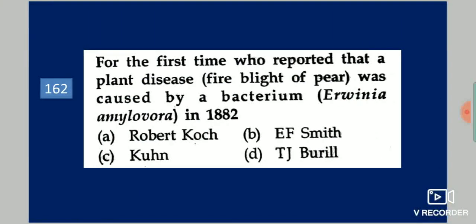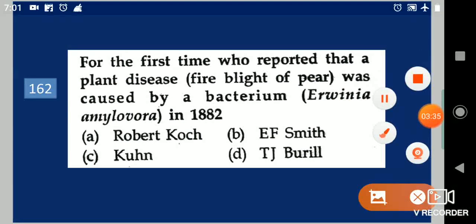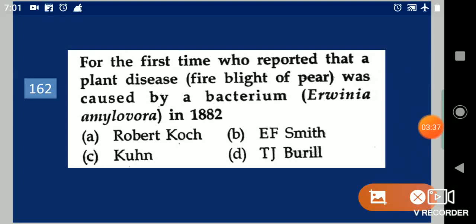Next question: For the first time, who reported that the plant disease fire blight of pear was caused by bacterium Erwinia amylovora in 1882? Your options are: Robert Koch, E.F. Smith, Kuhn, T.J. Burrill. Your answer is T.J. Burrill.